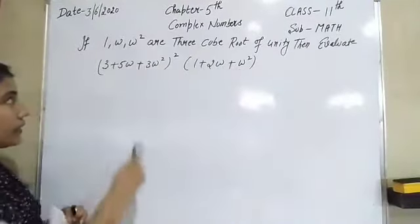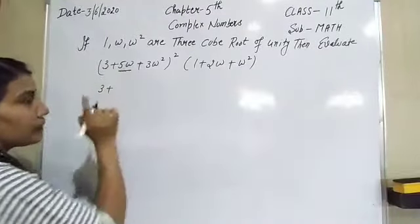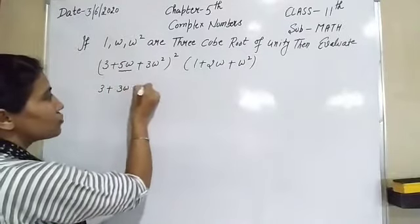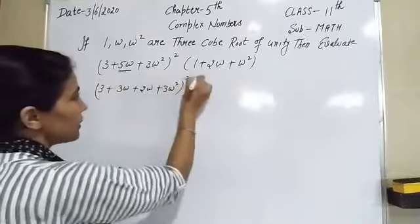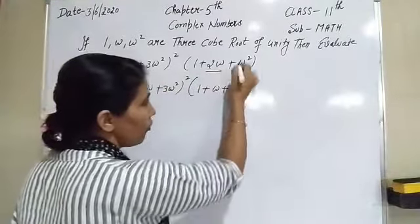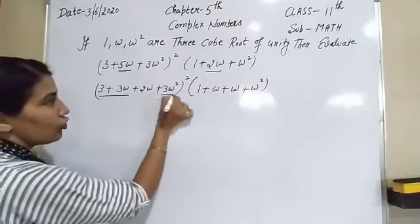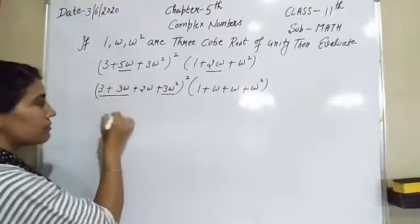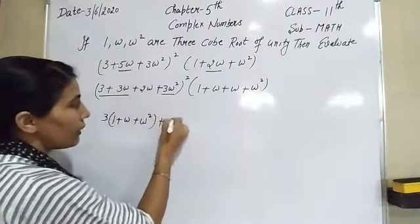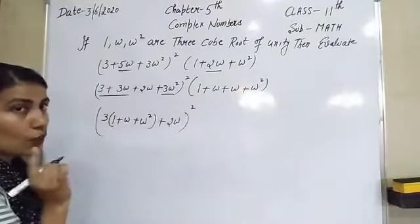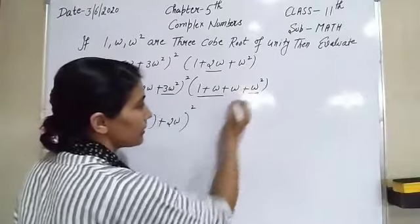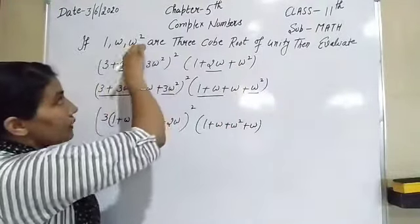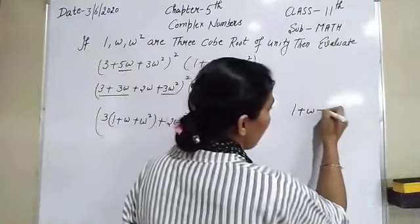Firstly, split 5ω into 3ω + 2ω. So we have (3 + 3ω + 2ω + 3ω²)². Group as (3 + 3ω + 3ω²) + 2ω. Take 3 as common from the first three: 3(1 + ω + ω²) + 2ω. Since 1 + ω + ω² = 0, this becomes 3(0) + 2ω = 2ω. Similarly for (1 + 2ω + ω²): split as (1 + ω + ω²) + ω = 0 + ω = ω.